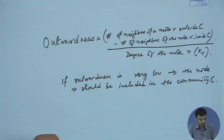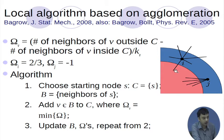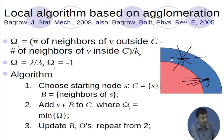If outwardness is very low, that means node V should be included in community C. For example, for node i, the number of edges going inside the community is 1, while those outside are 1, 2, 3, 4, and 5. So you make the difference: 5 minus 1 equals 4, normalized by the total degree of node i which is 6. That makes the outwardness score omega_i equal to 4/6, which is 2/3.